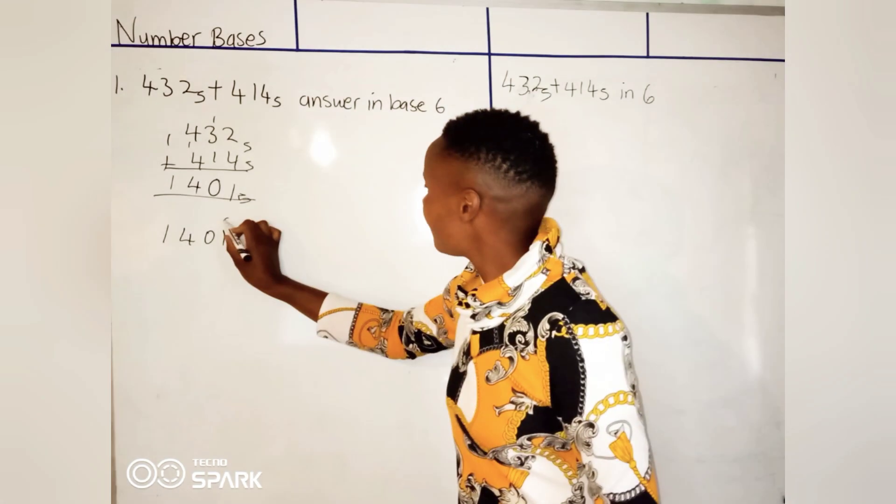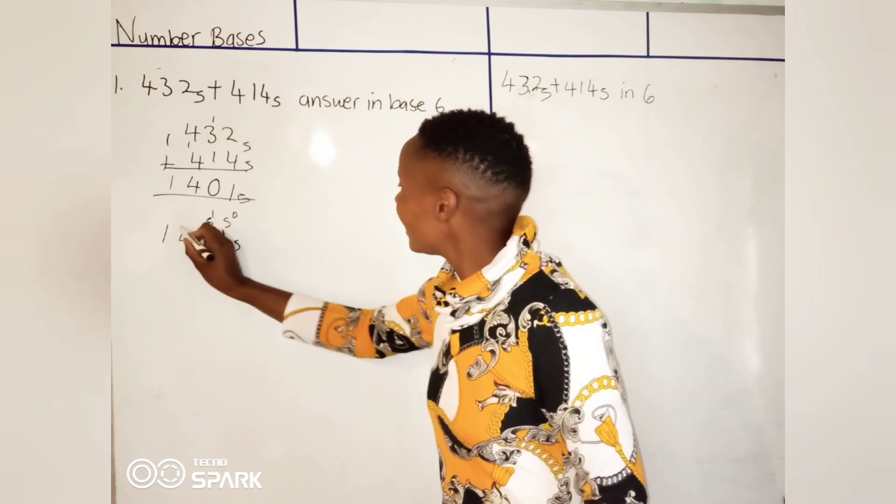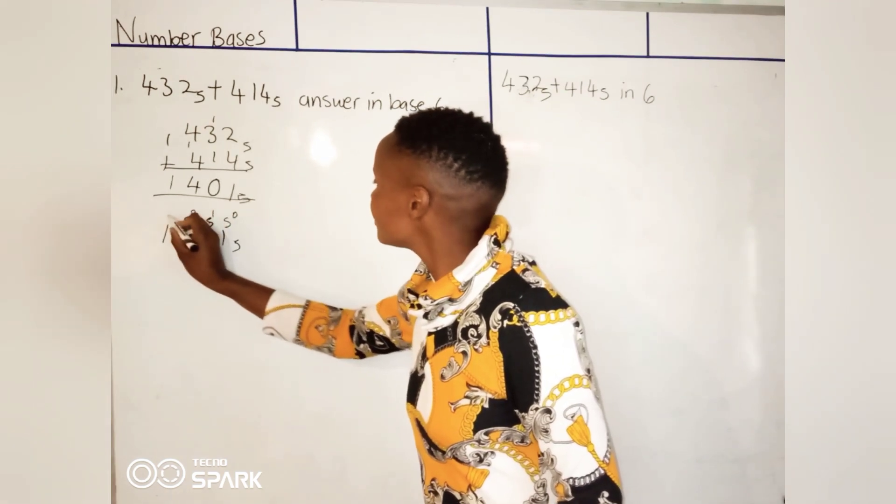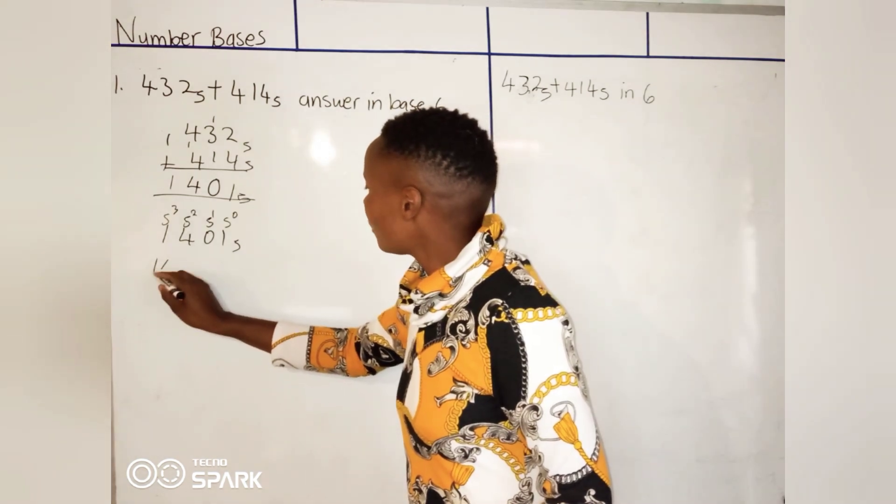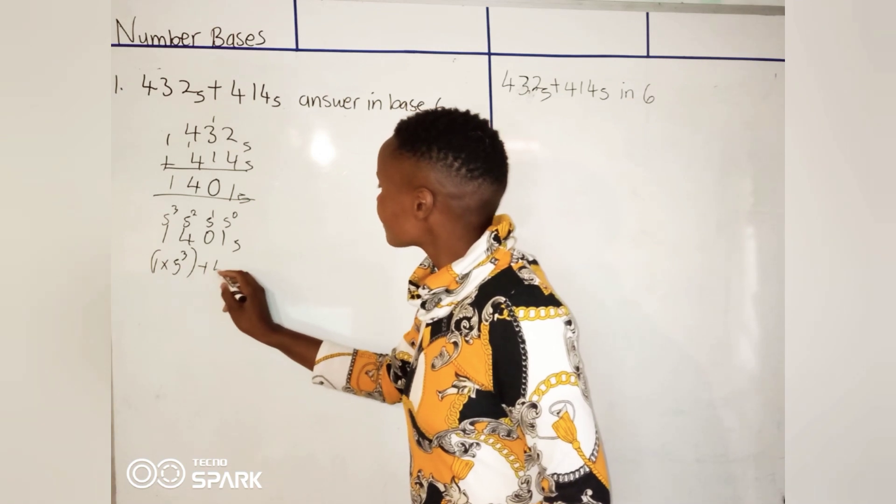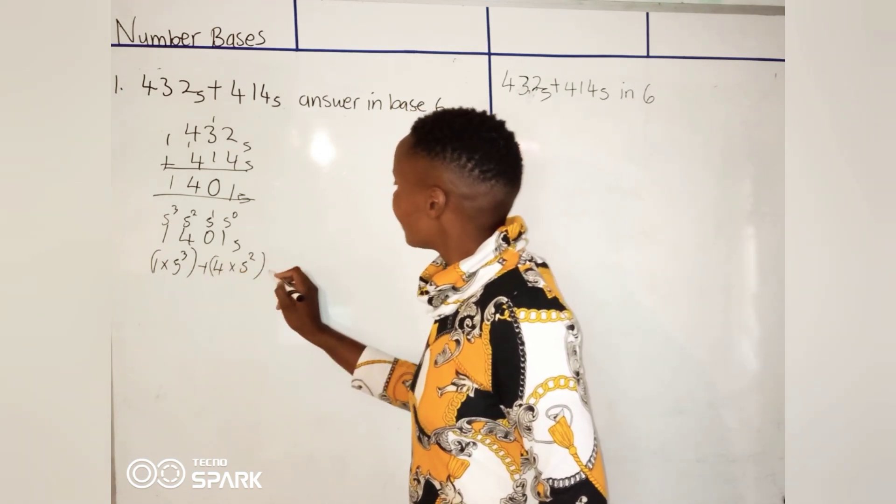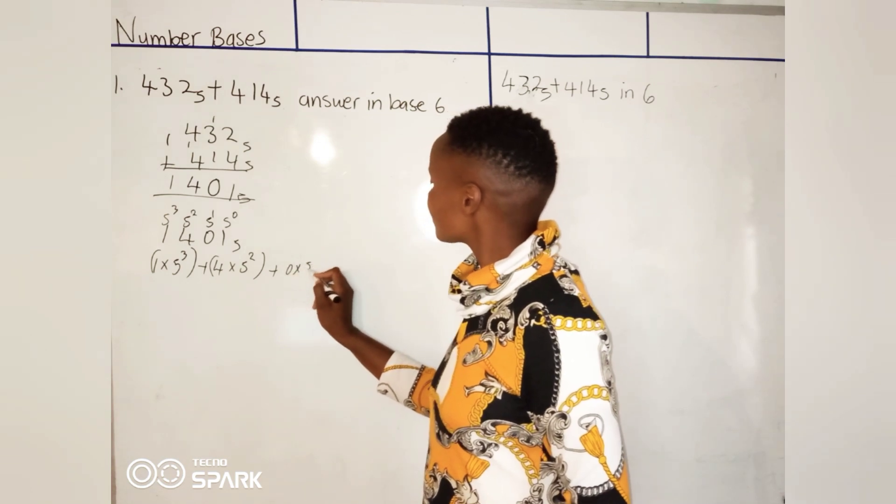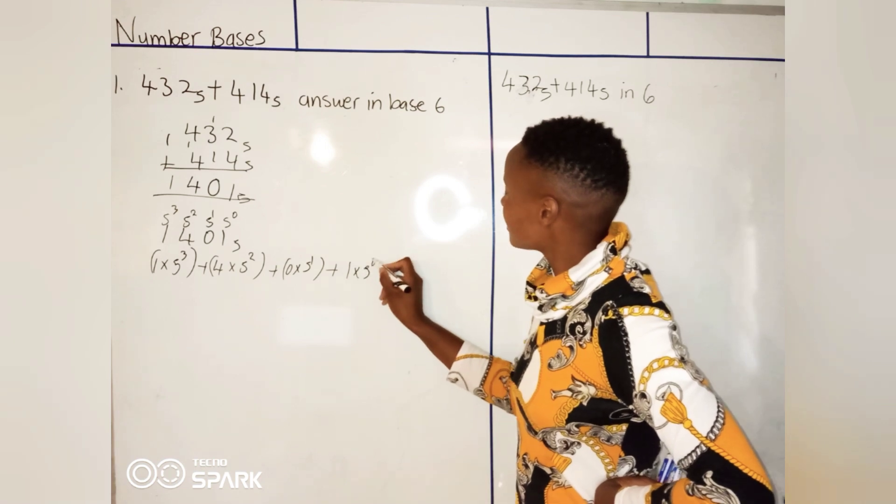We multiply by 5 to the power 0, 5 to the power 1, 5 to the power 2, and then 5 to the power 3. So it's going to be 1 times 5 to the power 3 plus 4 times 5 to the power 2 plus 0 times 5 to the power 1 plus 1 times 5 to the power 0.